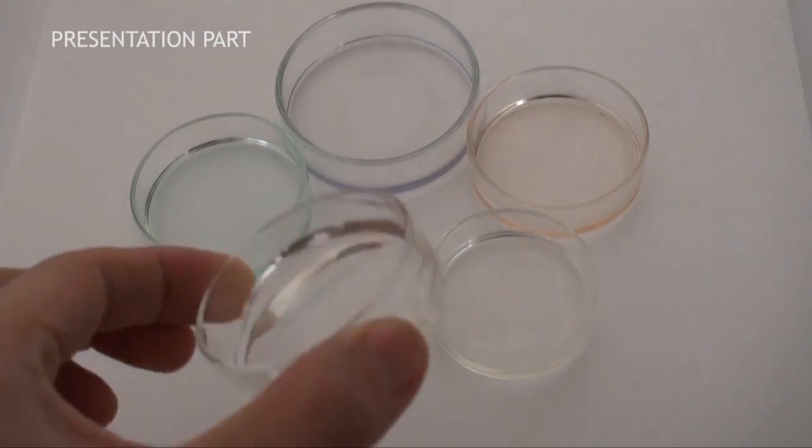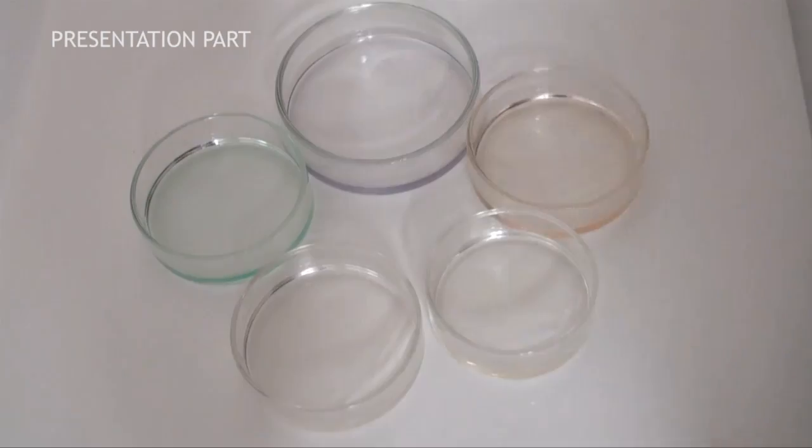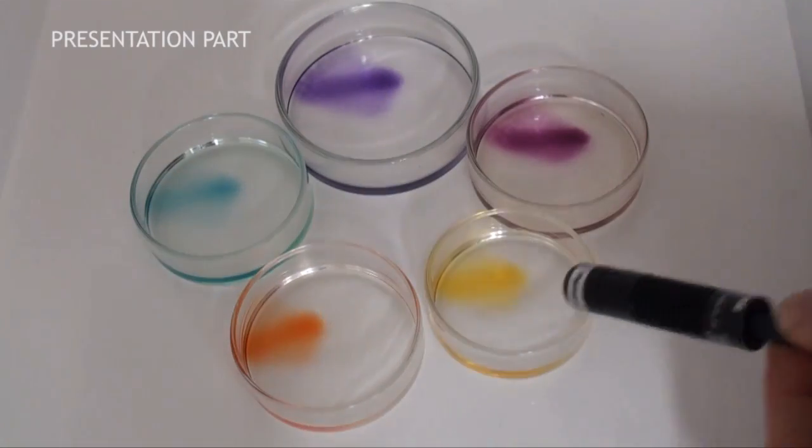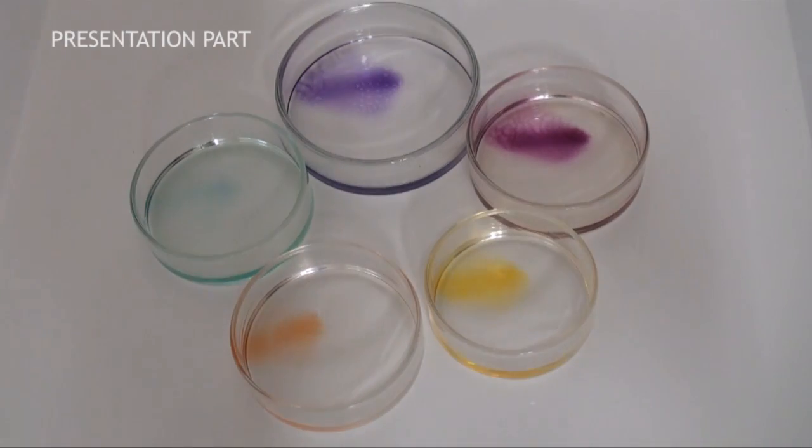As for the photochromic material, spiropyran is used. Spiropyran produces color under ultraviolet light and returns naturally to colorless and transparent when the ultraviolet light is blocked.